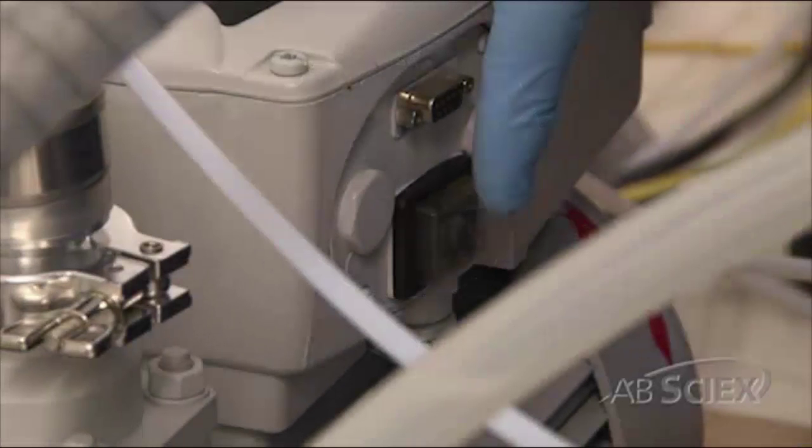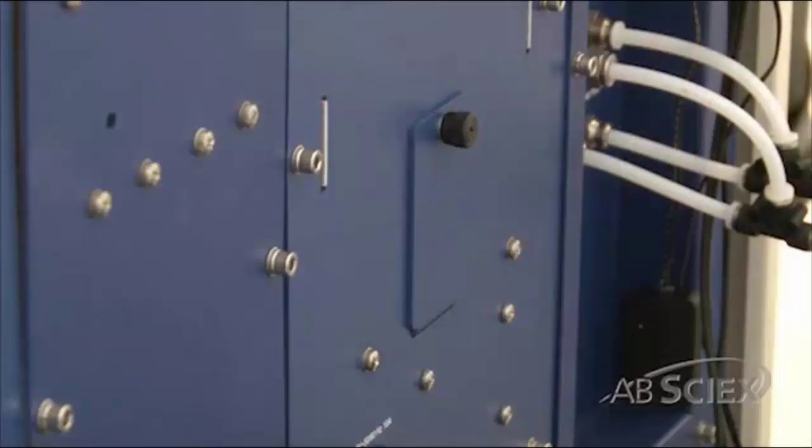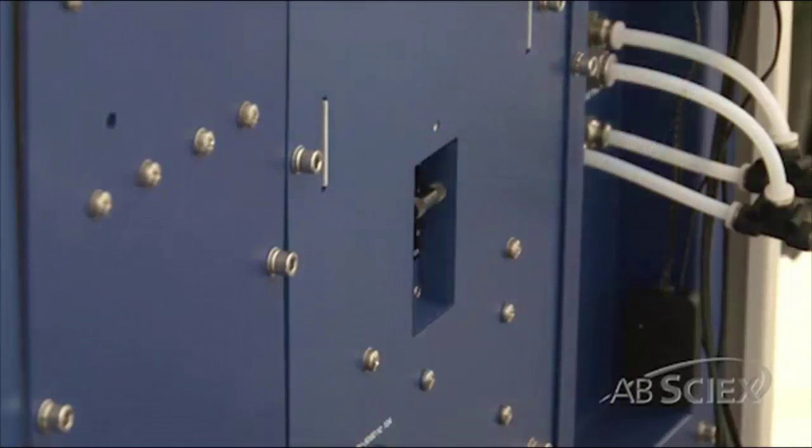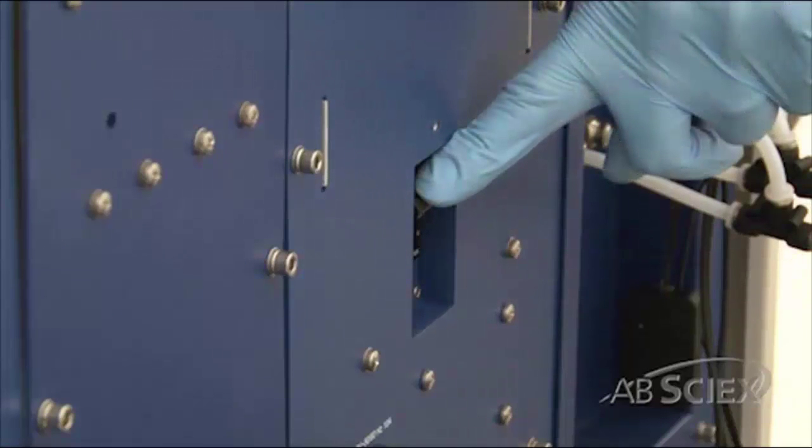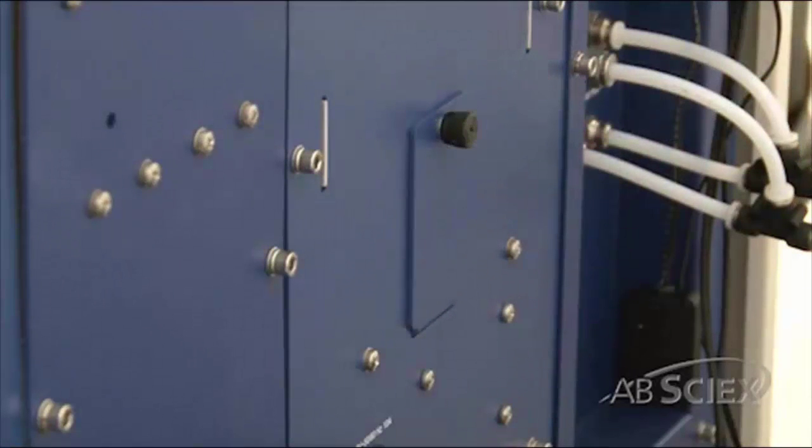Turn off the roughing pump. Remove the cover on the circuit panel. Turn off the circuit breaker switch on the left side of the mass spectrometer and then turn off the circuit breaker. Replace the cover over the circuit breaker switch and then tighten the screw holding the cover until it is finger tight.